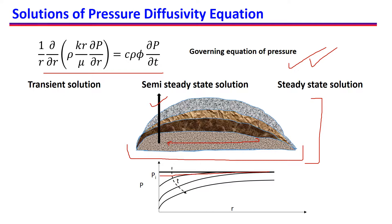As we start producing with the flow rate Q, because of the compressibility of the fluid, the oil will start expanding and the volume that the oil is expanding will be produced, as we have seen in our material balance. Now because we are producing, the pressure in the reservoir will start decreasing. Near the well the pressure decreases more, and away from the well the decrease in pressure is not as much.